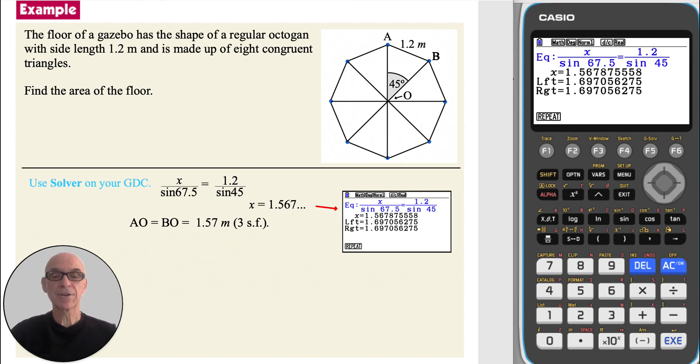Write down the value of X. So the length of AO and BO are 1.57 meters, correct to three significant figures.